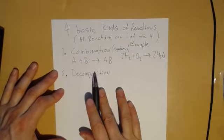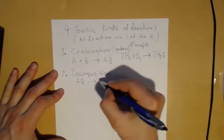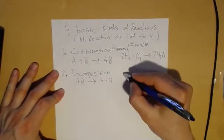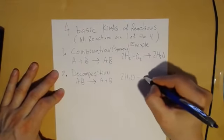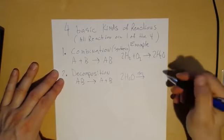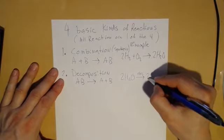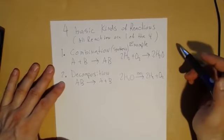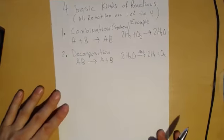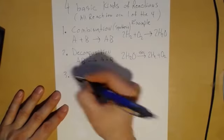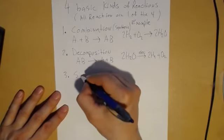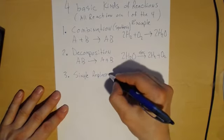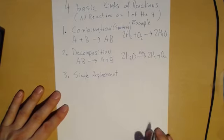Decomposition is basically the opposite of combination: something splits apart into its components. Water is actually reversible — with electricity and some ions present, water separates into hydrogen and oxygen gas. That's a decomposition. There are many decompositions; that's just a simple one. The third basic kind is a single replacement, sometimes called single displacement.